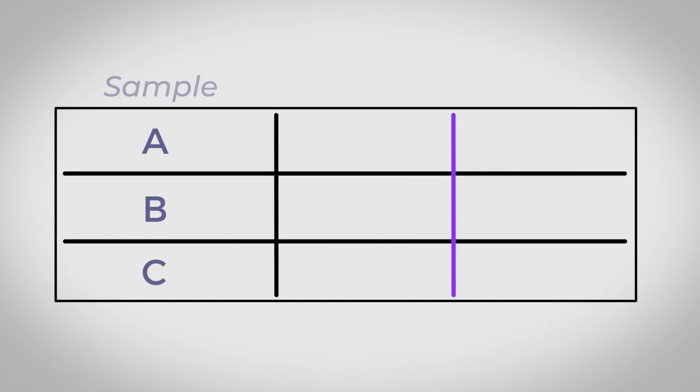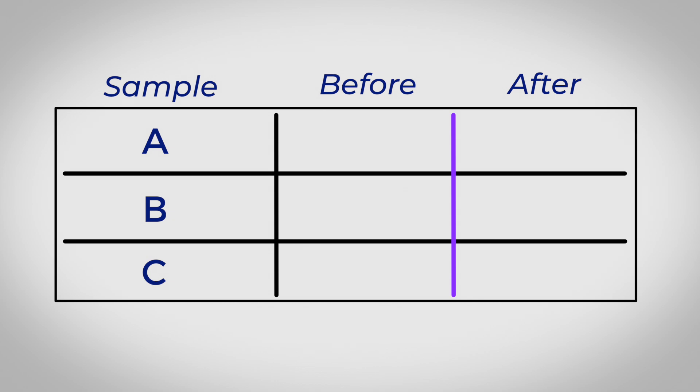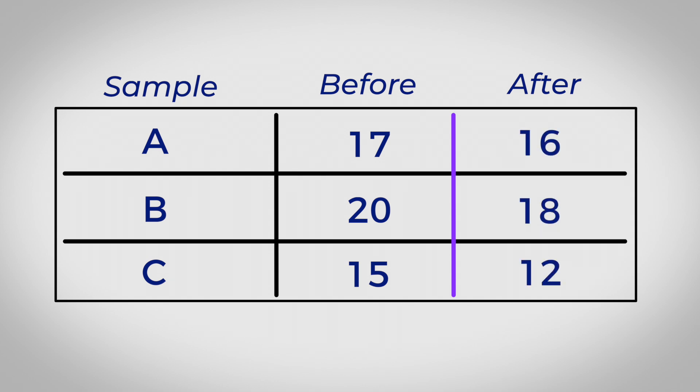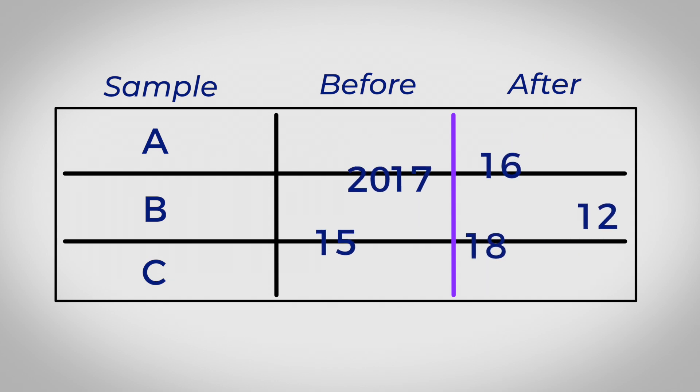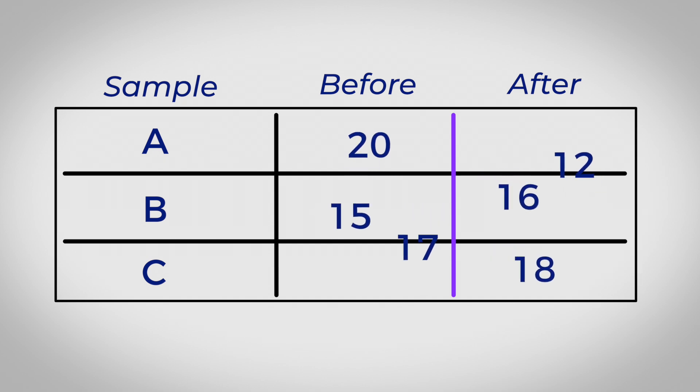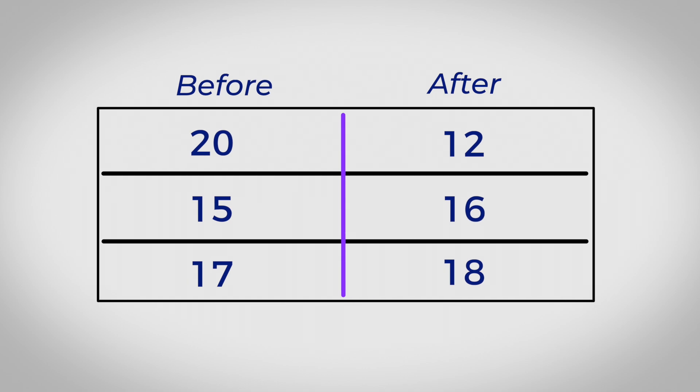For example, if you took measurements before and after a given intervention, you would want to line up the before and the after for a given sample. Now if you re-sorted the before column separately and the after column separately, you would lose information because the before and after were related to a single person or a single sample. Because you're losing information by re-sorting, that means you could use a paired t-test — those two numbers are more closely related to each other than to any other number within those columns.